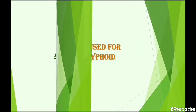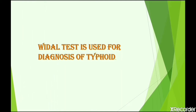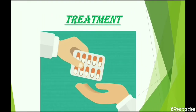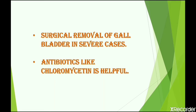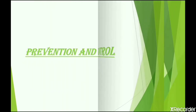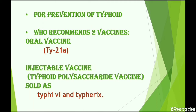Diagnosis: The Widal test is used for diagnosis of typhoid. Treatment: Surgical removal of the gallbladder in severe cases is recommended. Antibiotics like chloromycetin are helpful for treatment. Prevention and Control: WHO recommends two vaccines — an oral vaccine TY21A and an injectable typhoid polysaccharide vaccine, sold as Typhi Vi and Typhi Riggs.